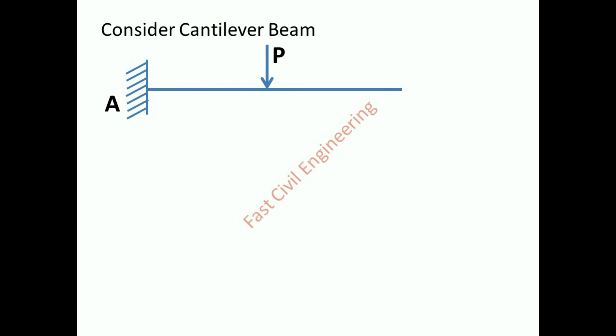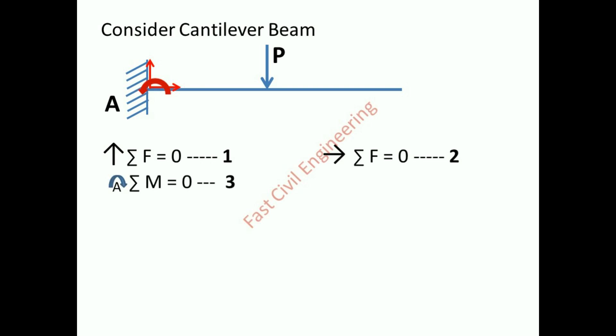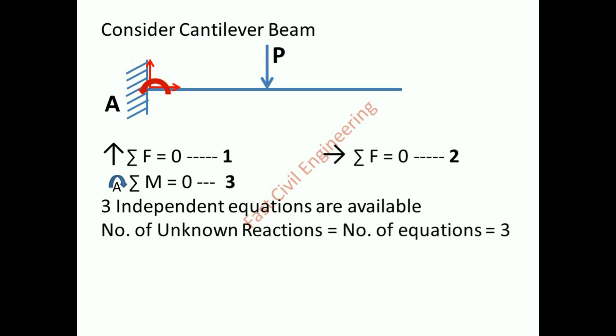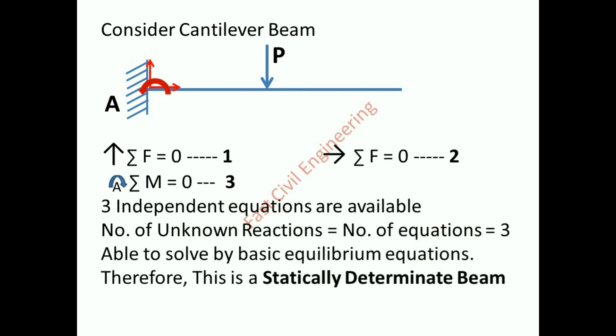Consider a cantilever beam: one side fixed end, other side free end. The fixed end has two force reactions and one moment — totally three reactions. Summation of vertical forces equals zero, summation of horizontal forces equals zero, summation of moment about A equals zero. Number of unknown reactions equals number of equations equals three. Able to solve by basic equilibrium equations; therefore, this is a statically determinate beam.